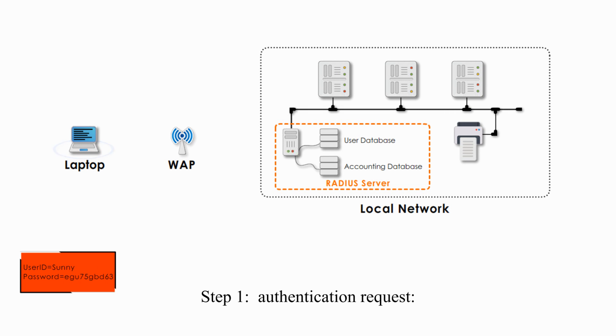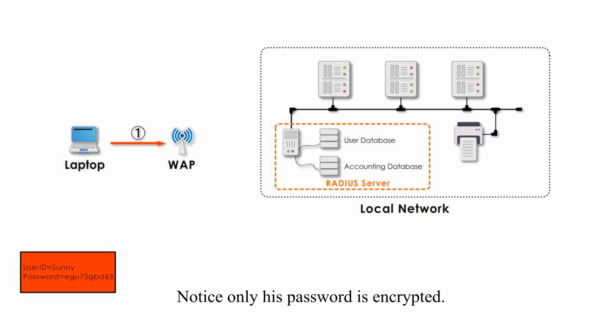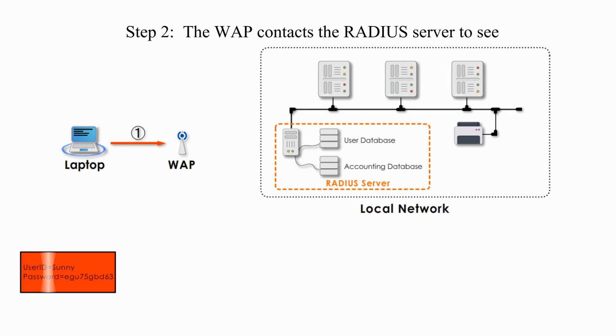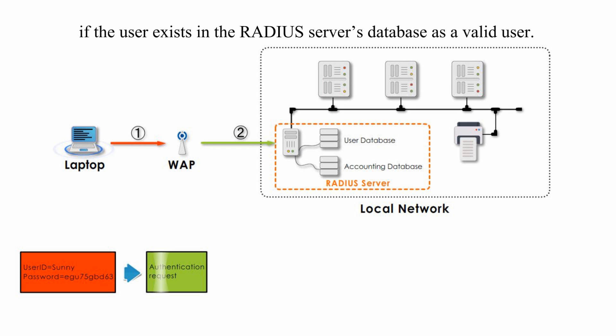Step 1: Authentication request. The user contacts the WAP and requests permission to access the network with his user ID and password. Notice only his password is encrypted. Step 2: The WAP contacts the RADIUS server to verify if the user exists in the RADIUS server database as a valid user.